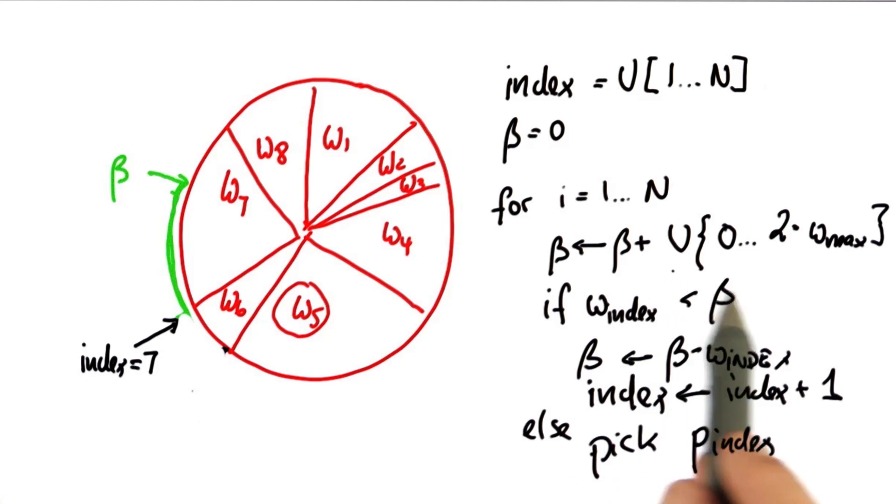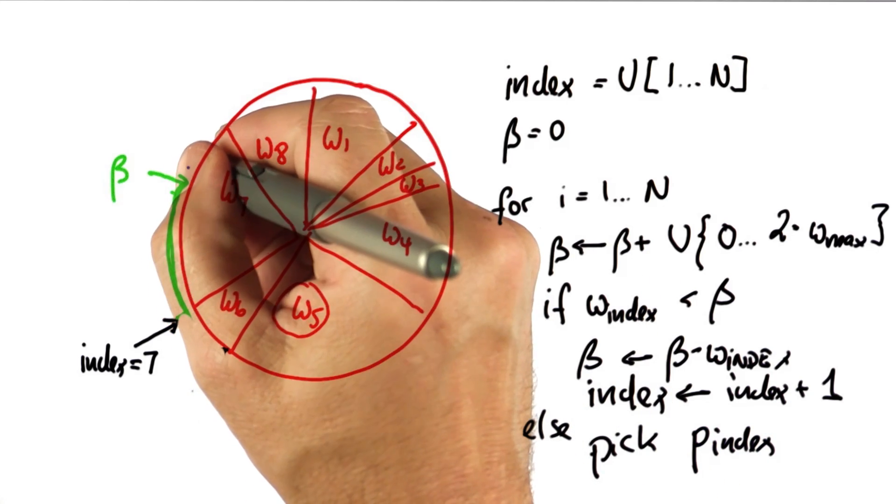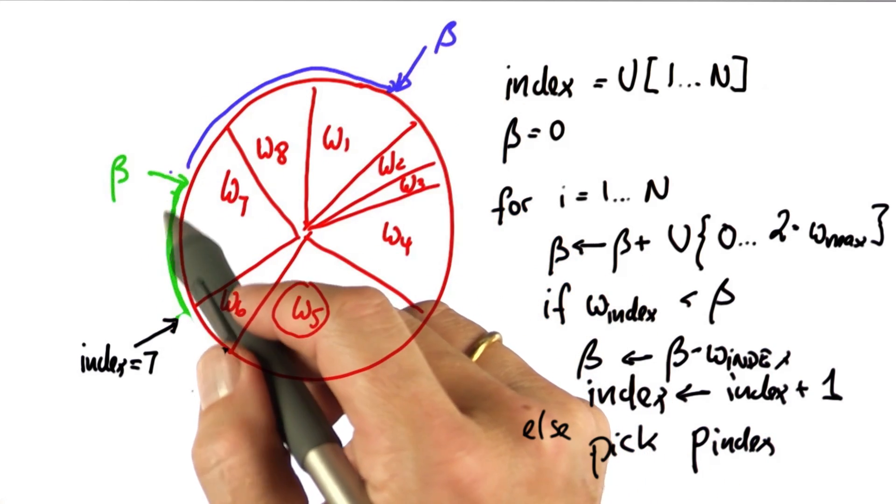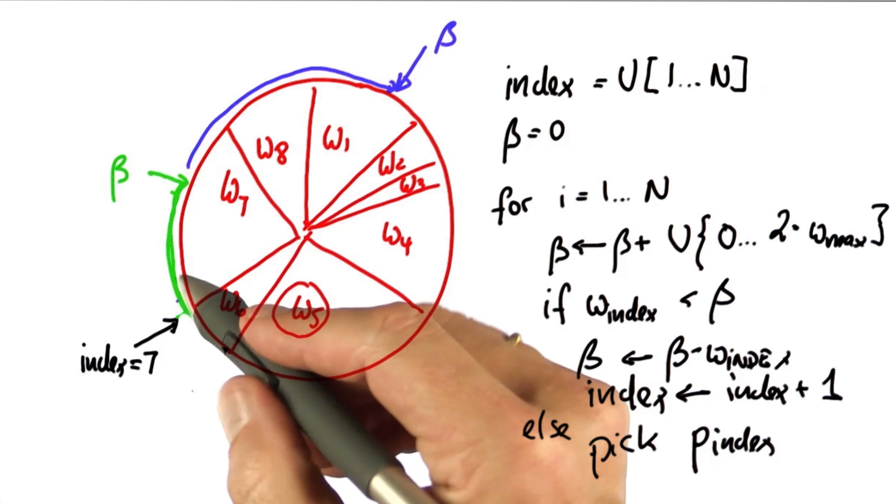I now iterate. I add another uniform value to beta. Say I add this one. This is the value I add. This is the value beta previously had. The same iteration.